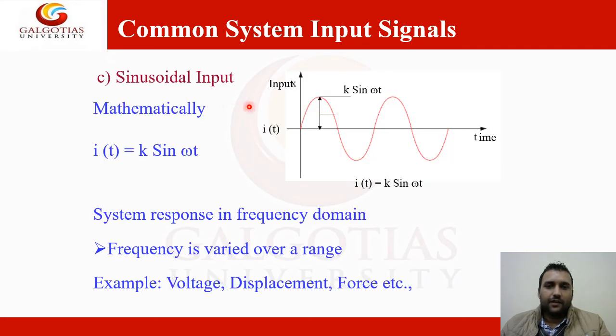Next is the sinusoidal input. This is the sinusoidal wave, which is i(t) is equal to k sin omega t. We already know this equation. The system response in frequency to which frequency varies with the range, that is voltage, displacement, force, etc.